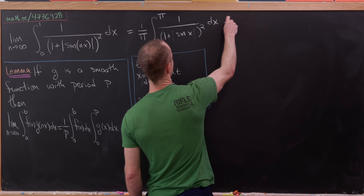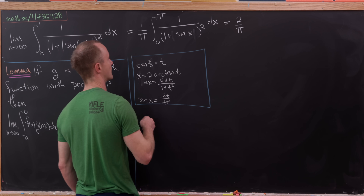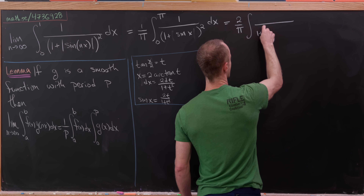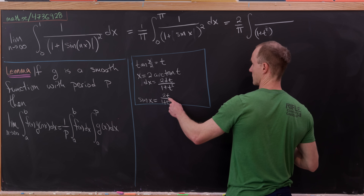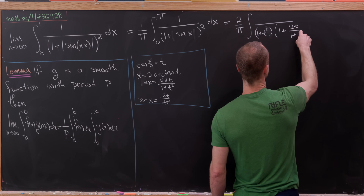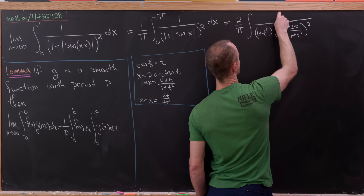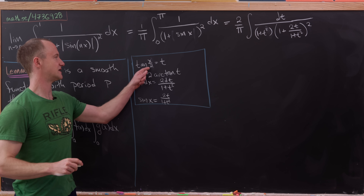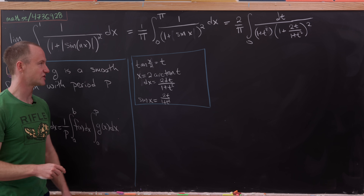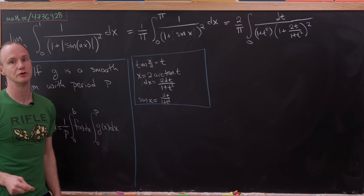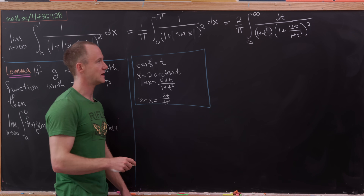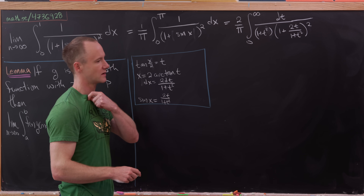Plugging that in, we get 2 over pi — taking the 2 out front — times an integral where the denominator has 1 plus t squared from the dx component, times (1 plus 2t over (1 plus t squared)) squared, with dt in the numerator. For the bounds: when x is 0, t is 0; and as x approaches pi from below, tangent of x over 2 approaches infinity. So the integral runs from 0 to infinity.